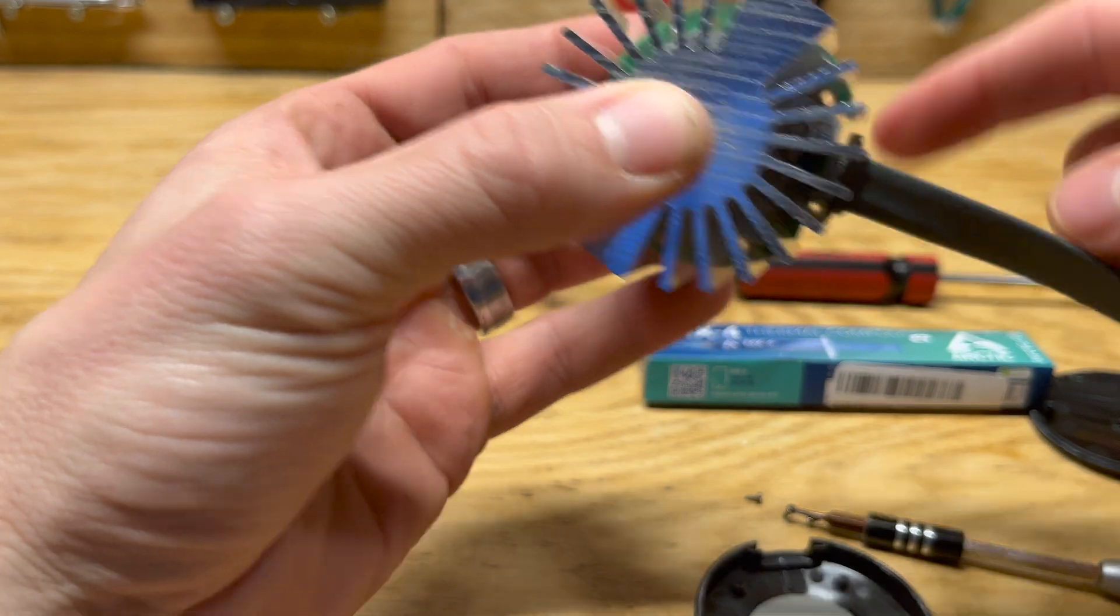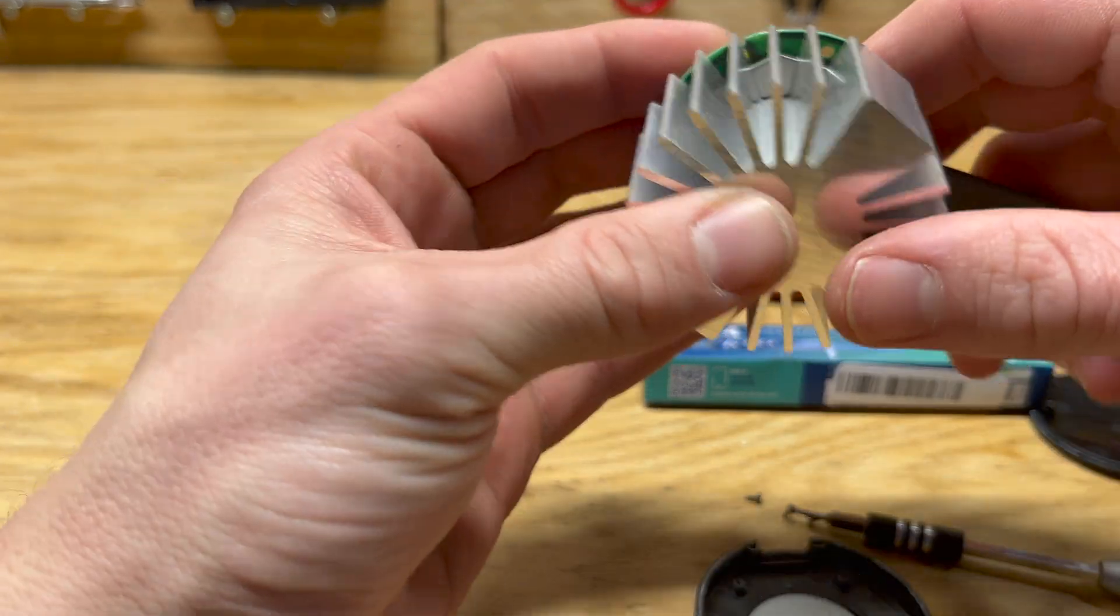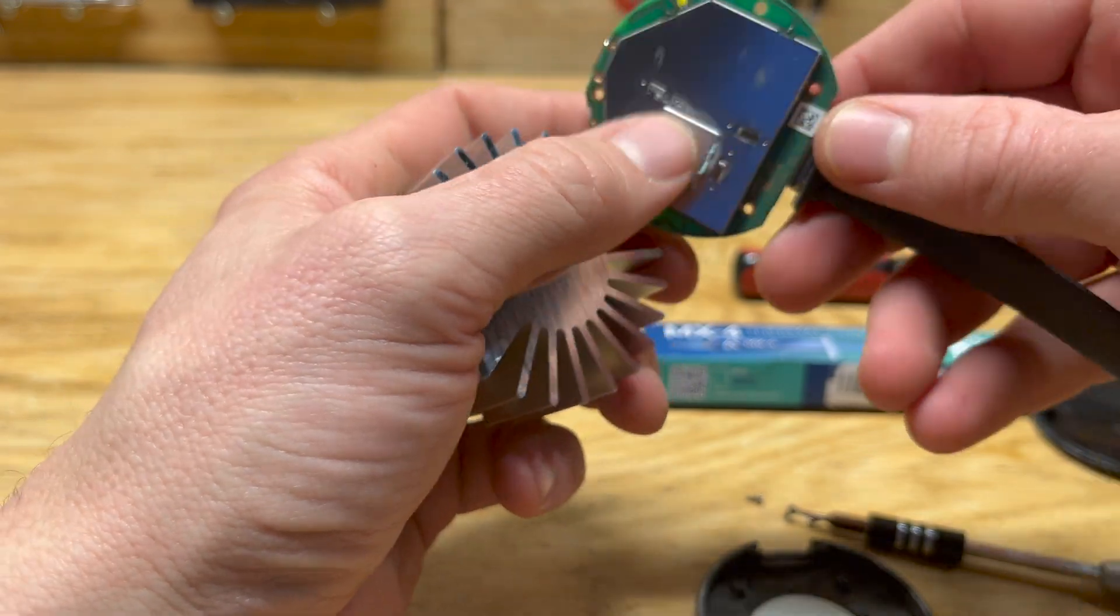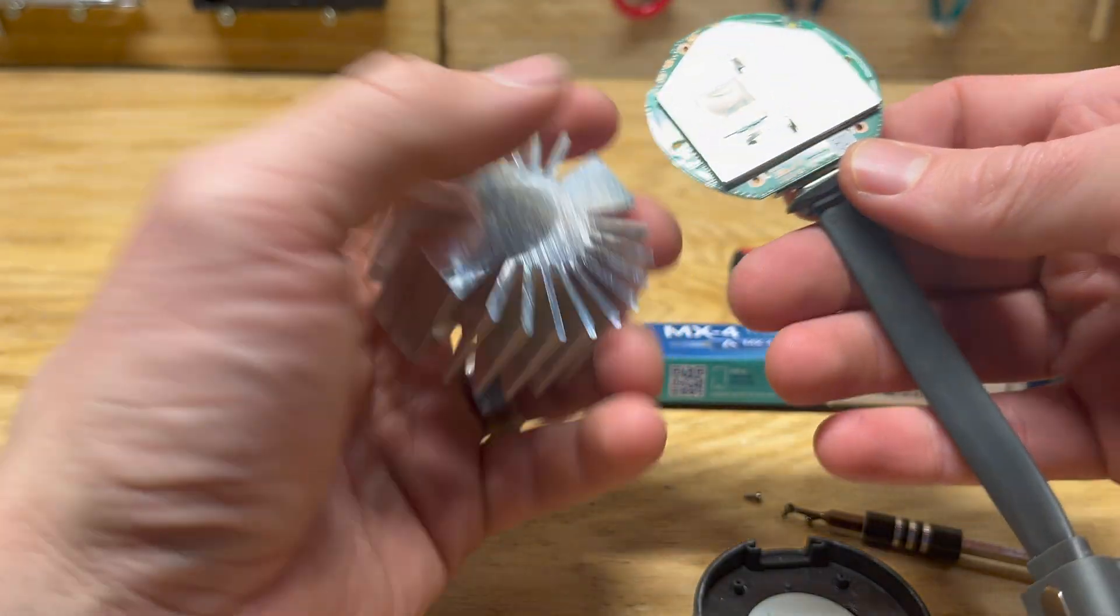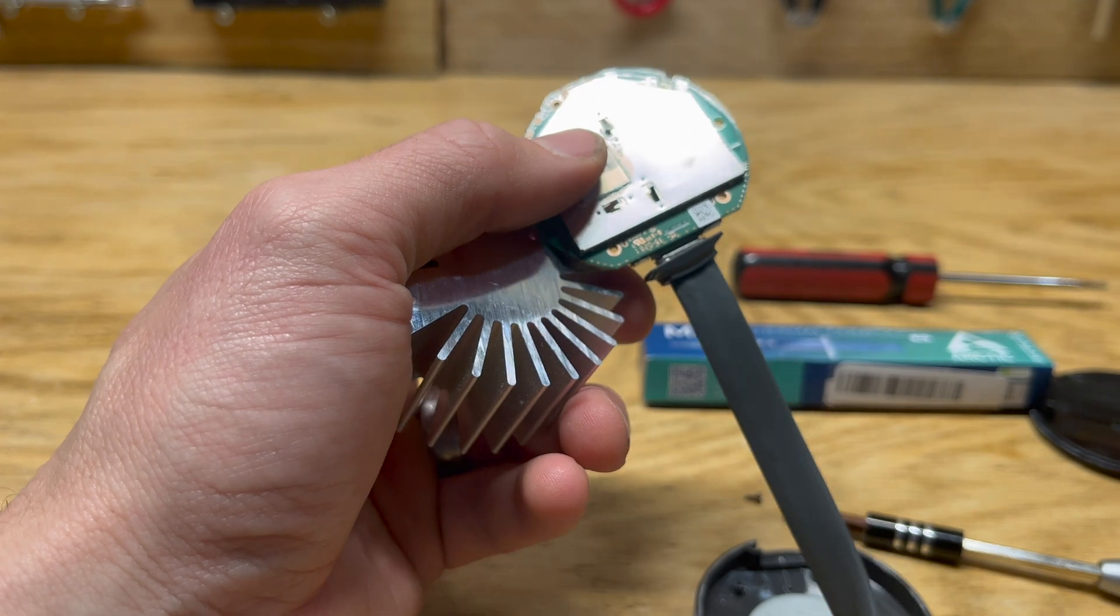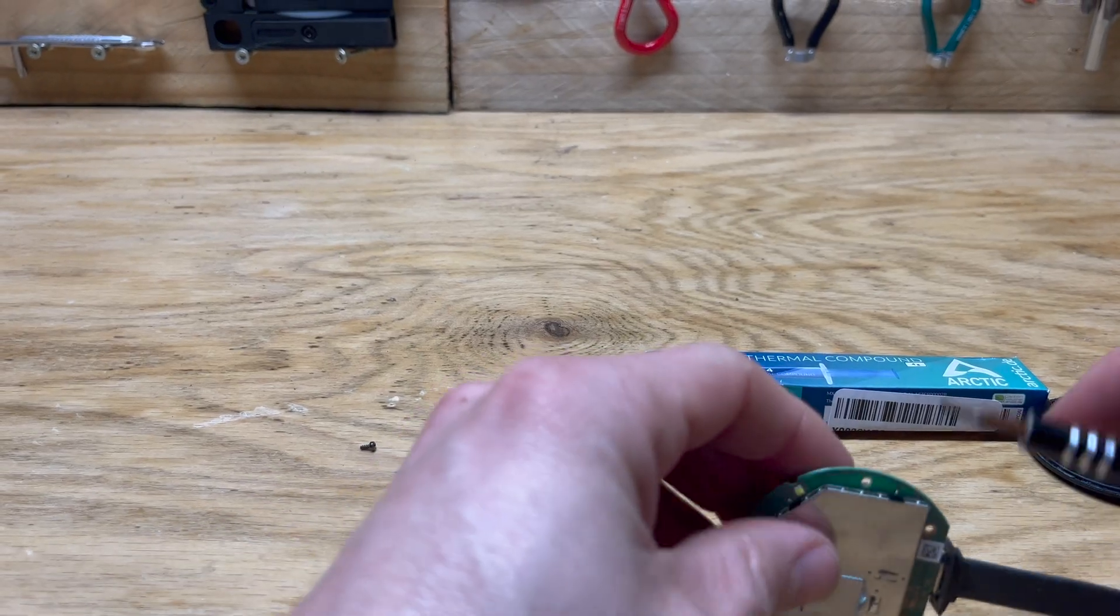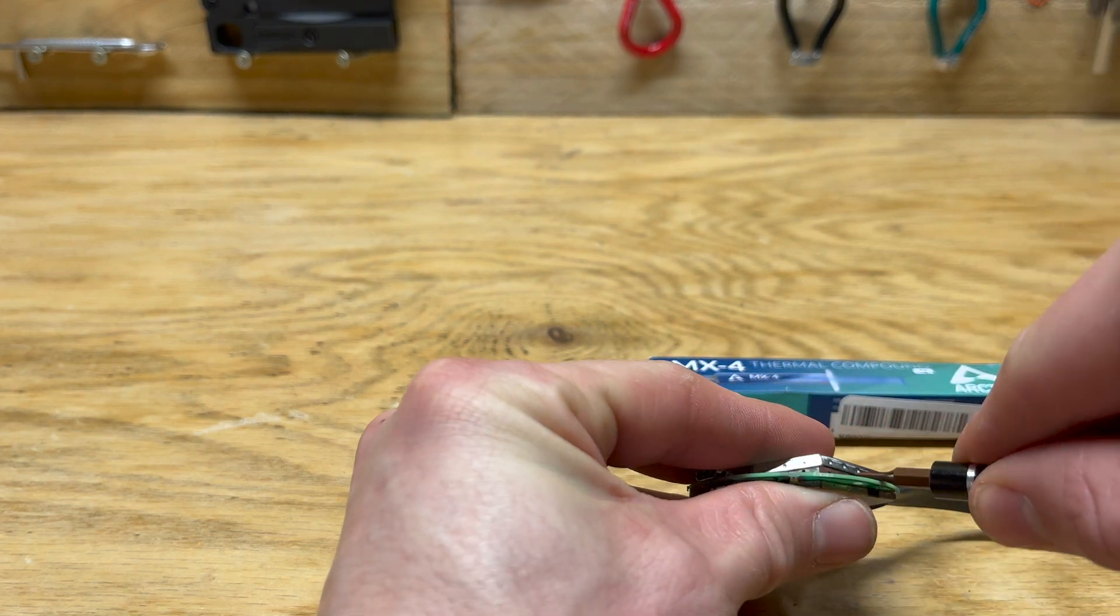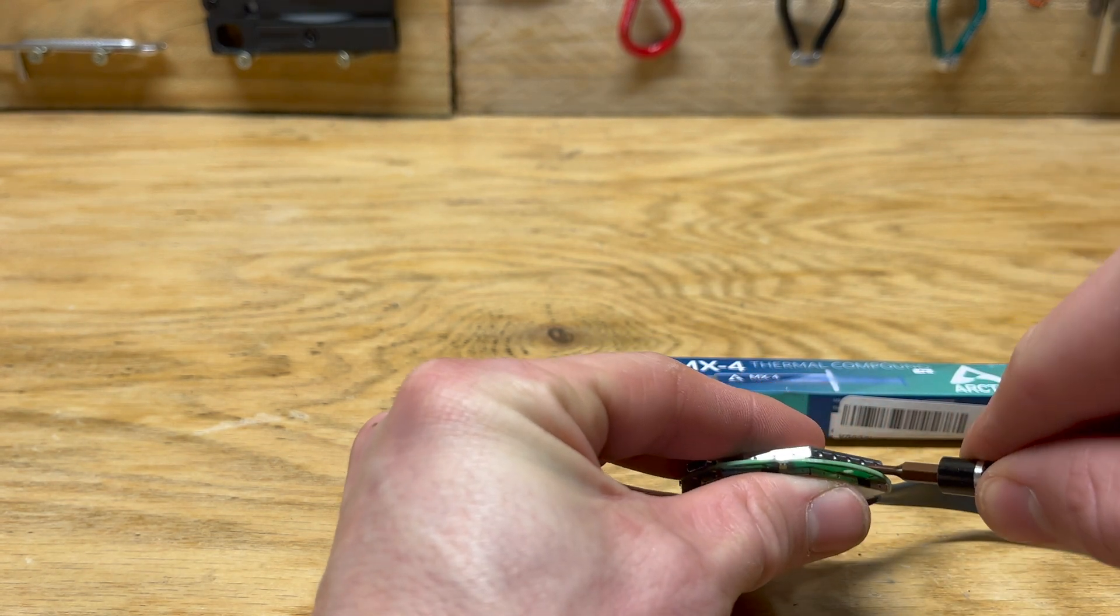Our plan would be to put new thermal paste on and then use this as the heat sink for the back. We'll tape the whole thing around with the thermal tape and see how that works. Before we do that, I'm going to take each of these metal pieces off because there's some thermal compound underneath that I can also replace.